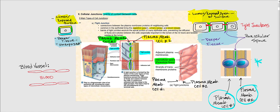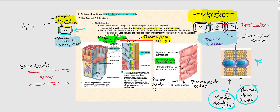We find tight junctions in the epithelia of the digestive system, the urinary system, and the blood vessels. Looking at a single cell, let's label parts of its plasma membrane. The area facing the lumen or exposed surface is called the apical surface — some say apical, both are acceptable.